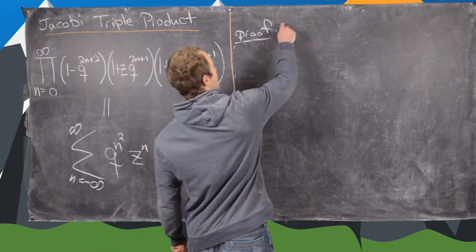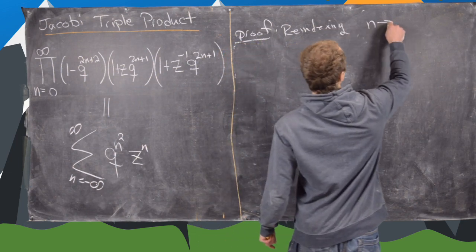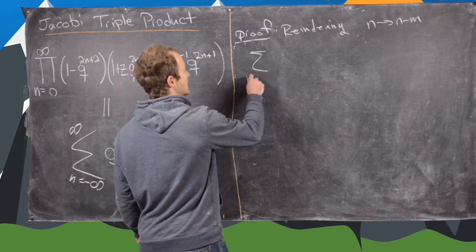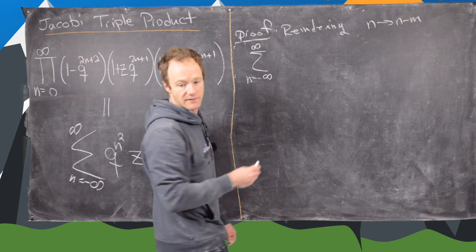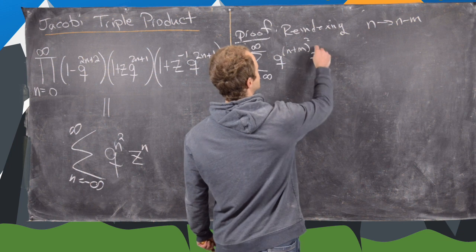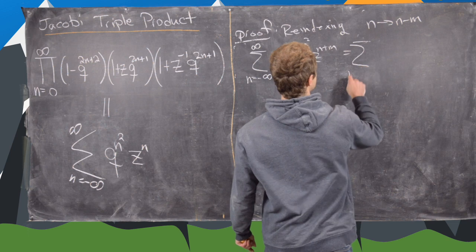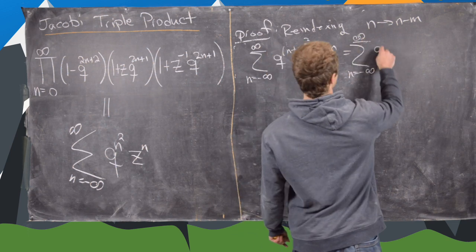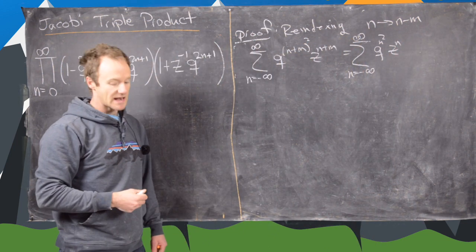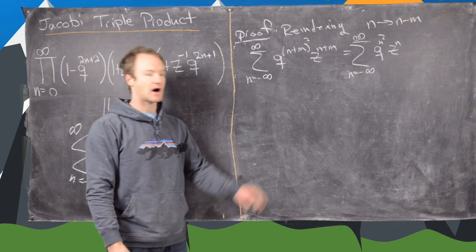The next step is a re-index: taking n to n minus m sends the sum n equals minus infinity to infinity of q to the n plus m squared times z to the n plus m into the sum n equals minus infinity to infinity of q to the n squared z to the n. We insert that into the big identity from the last board.